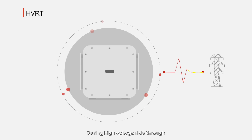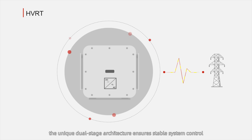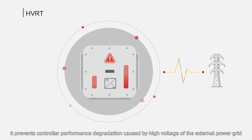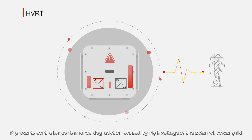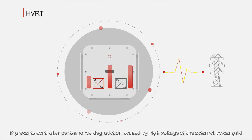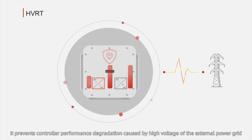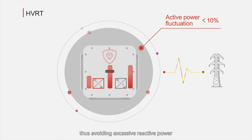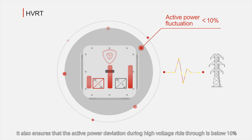During high voltage ride-through, the unique dual-stage architecture ensures stable system control. It prevents controller performance degradation caused by high voltage of the external power grid, thus avoiding excessive reactive power.